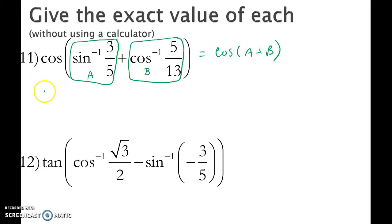So let's make our double X, Y, R chart. So X, Y, R for angle A and B. So for sine, we'll have 3, 5, and then 4. And for cosine, we'll have 5, 13, and then 12. Since both of those ratios are positive, we know that the angles are in quadrant 1.